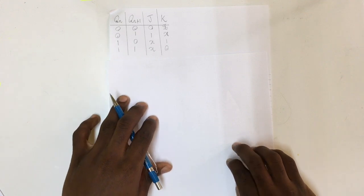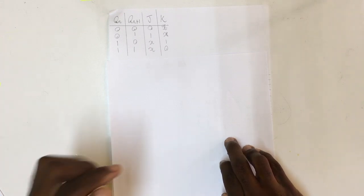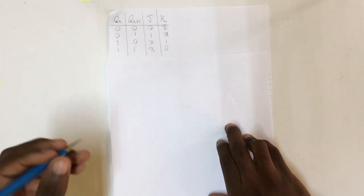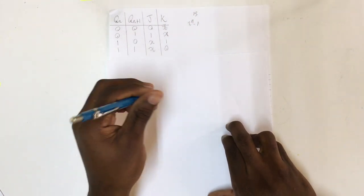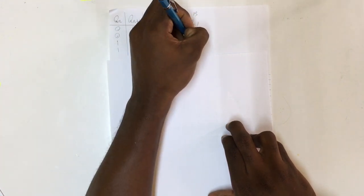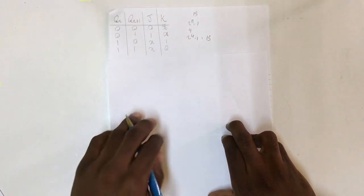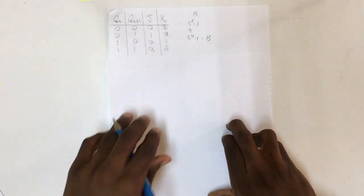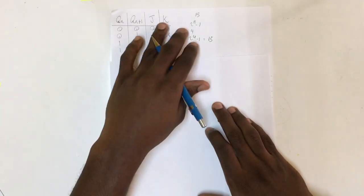Here we have the excitation table for the JK flip-flop. This will help us determine the state transition table. Since we are counting from 0 to 15, the maximum number is 15. Using the formula 2^n - 1, we get that n must be 4, so 2^4 - 1 gives us 15. The least amount of bits we can use is 4, and we must use the least amount of bits.